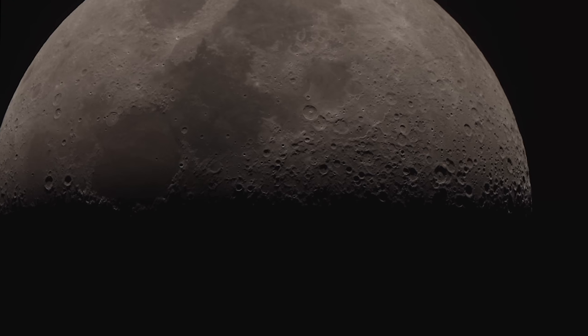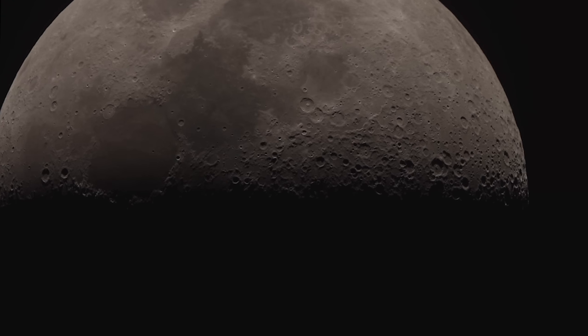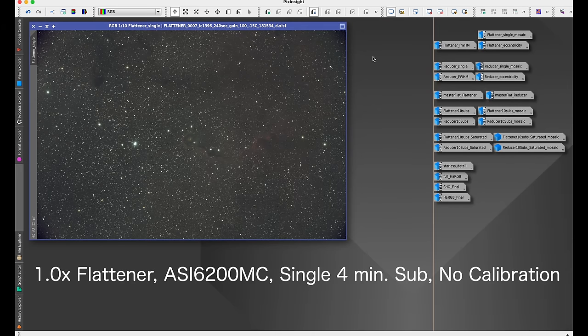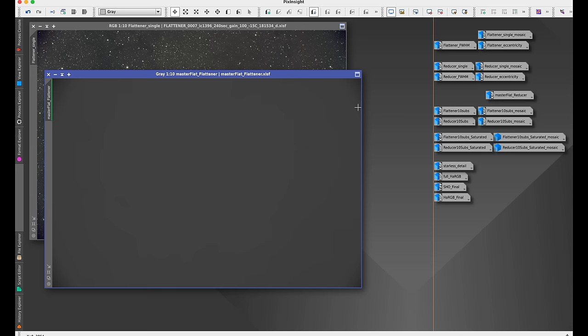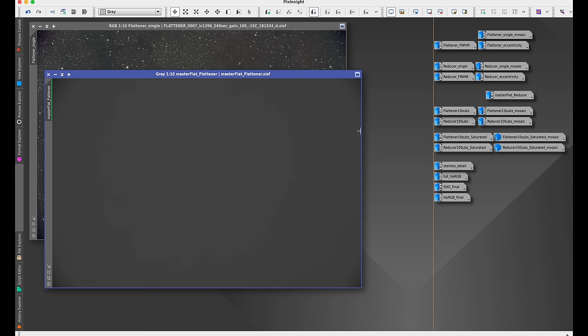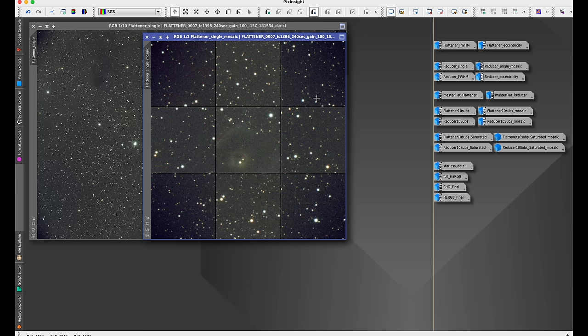This first image you're seeing here is just a single sub, a four minute sub exposure with the 1x flattener and the ASI 6200 MC, that full frame camera. This is a good test just to see the vignetting. Here is the flat and you can see it matches well against this, so the flat completely takes away that vignetting.